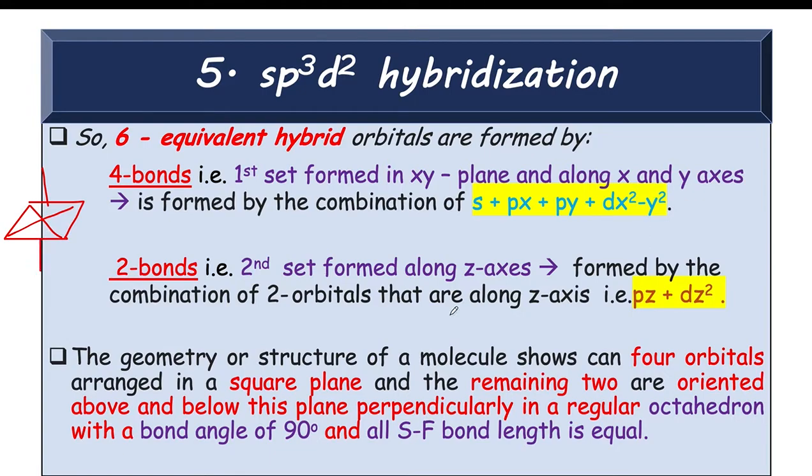So pz and dz². Always you can remember this in sp³d also we had taken the 3 hybridized orbitals in one plane that is we have taken s, px and py. Then pz and dz² will be forming the 2nd set of the bonds.